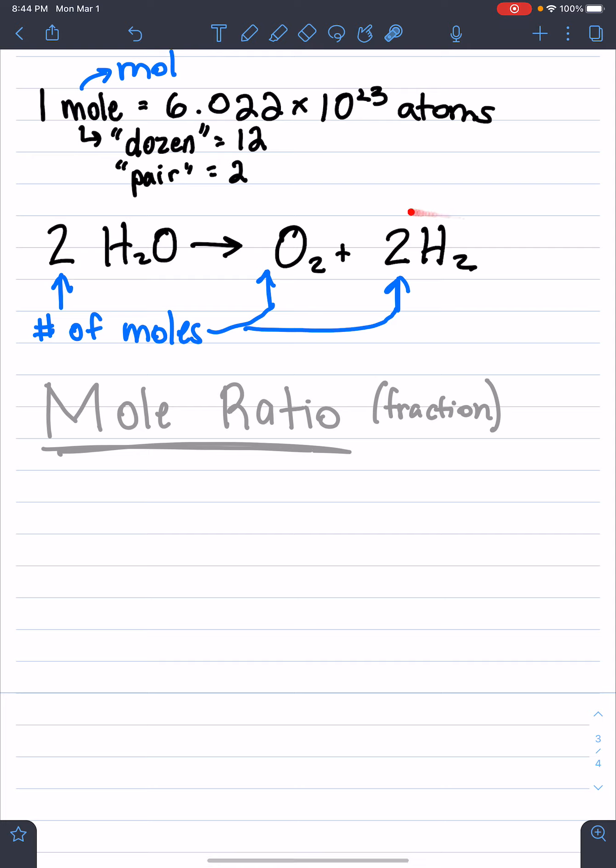So we're going to be looking at this equation right here and we're going to start writing a mole ratio for it. This will help us know if we have a certain amount of one substance, how much we will get out of the reaction, or if we get this much out of the reaction, how much should we start with. Let's get into it, it'll make more sense as we go.